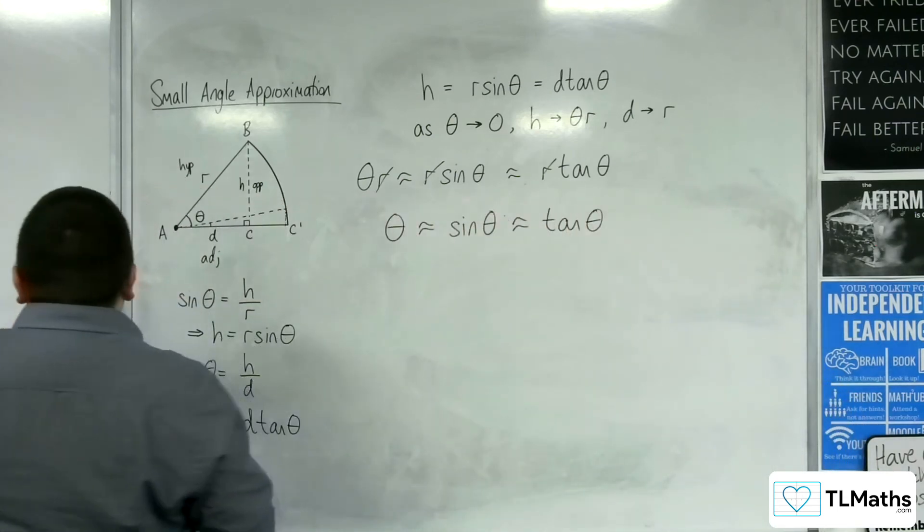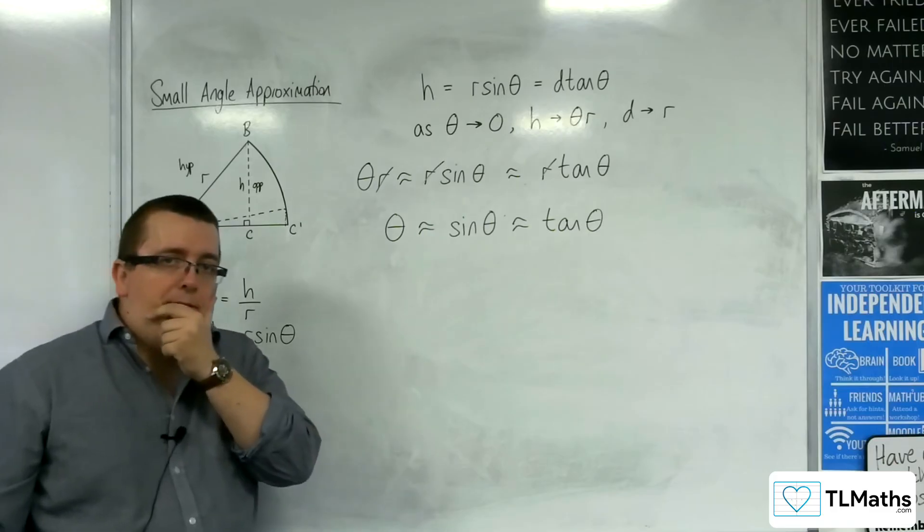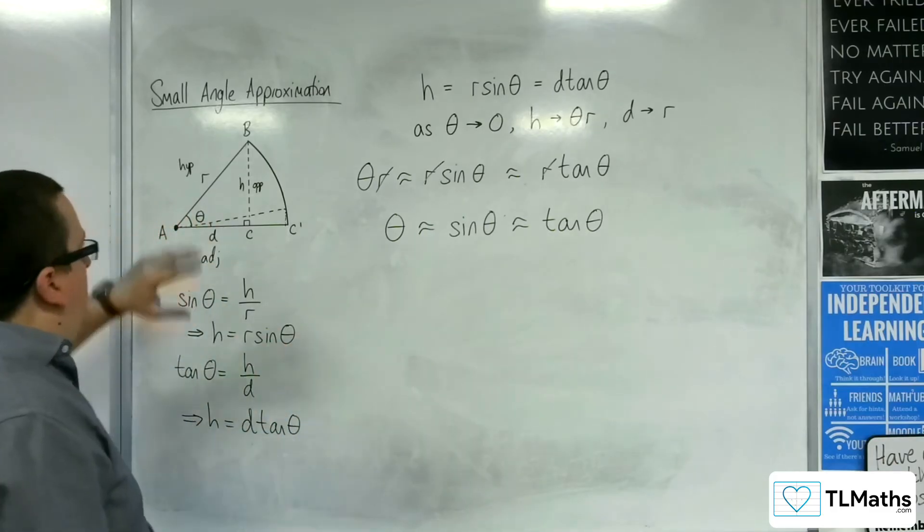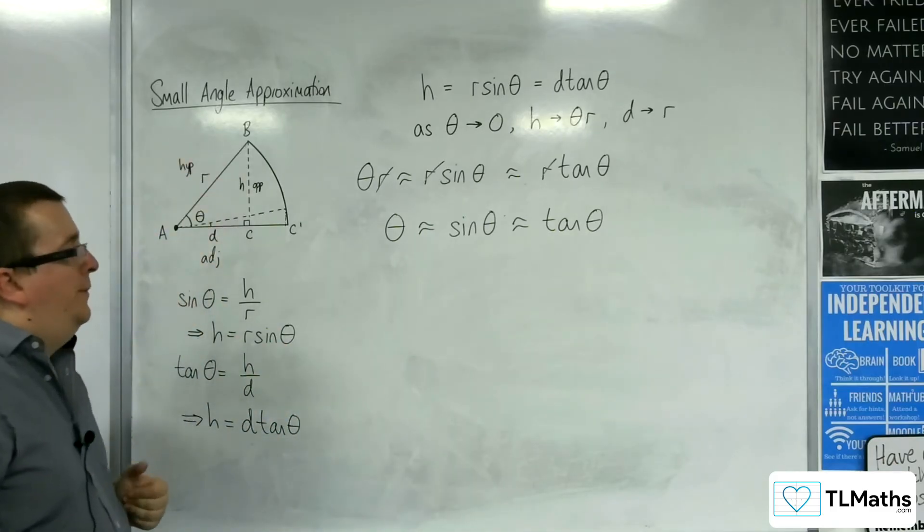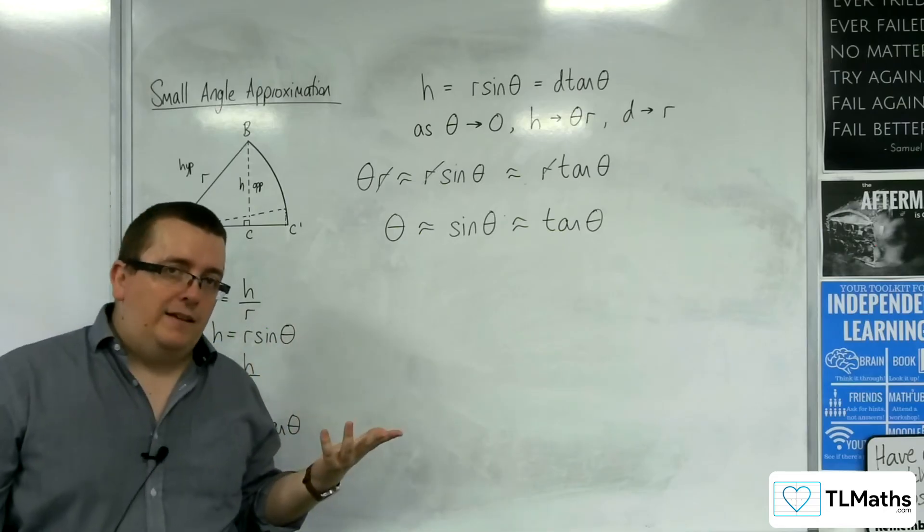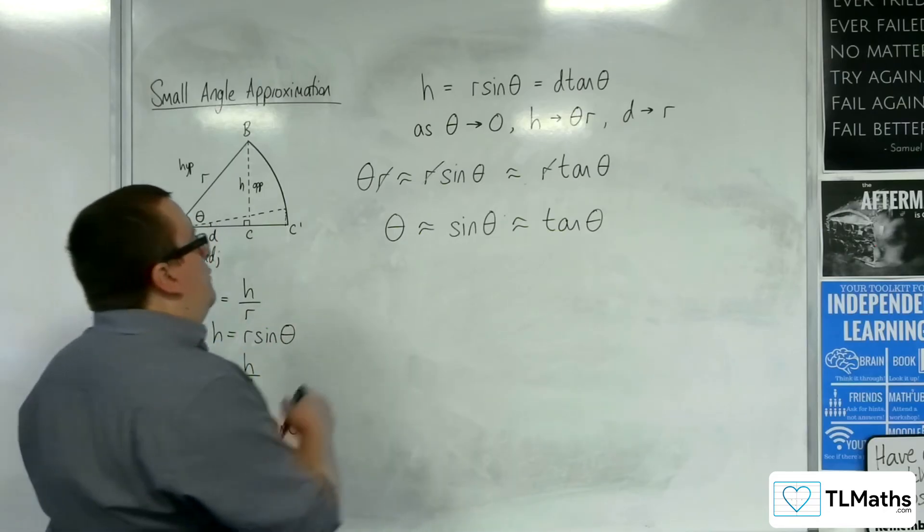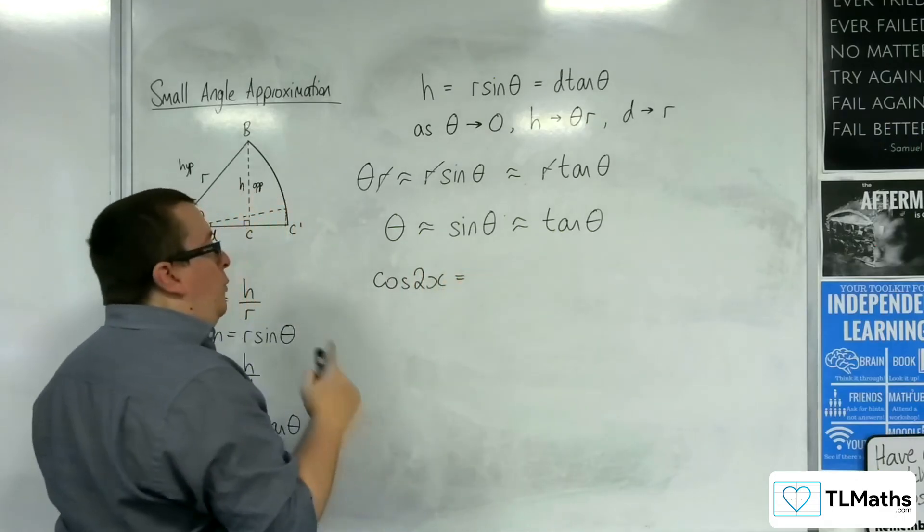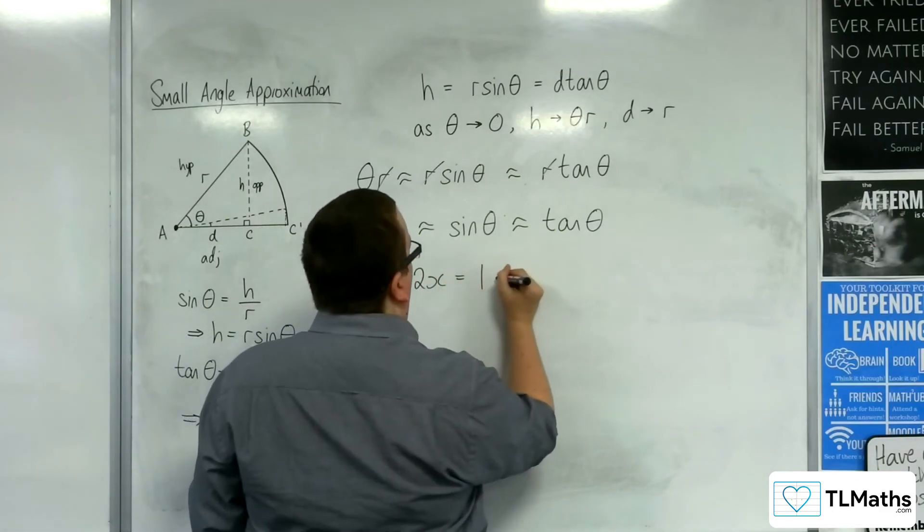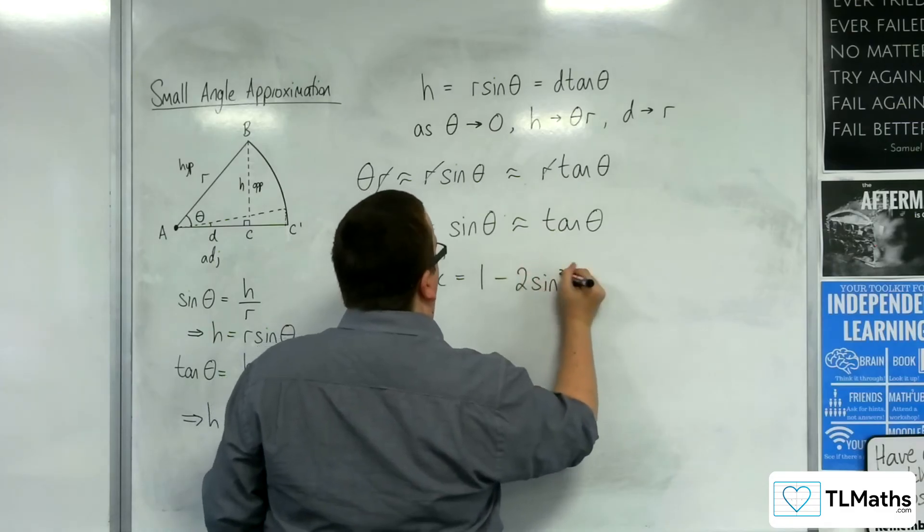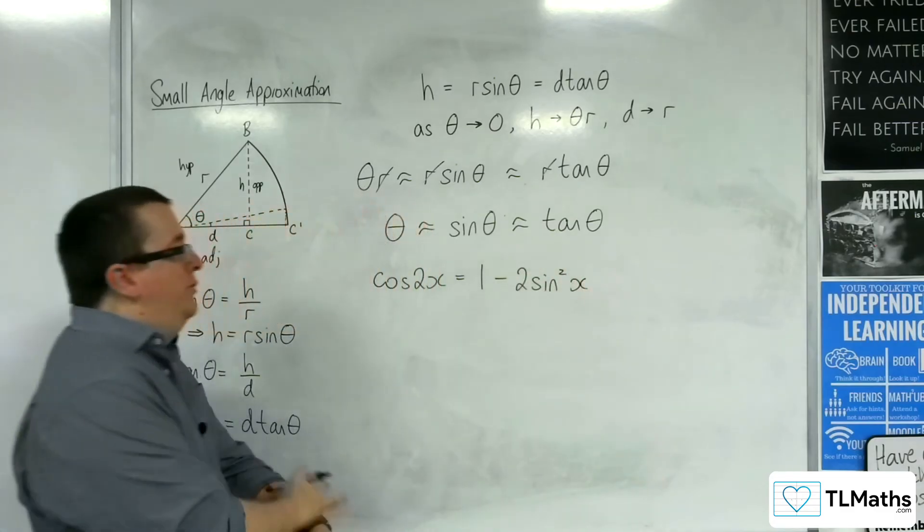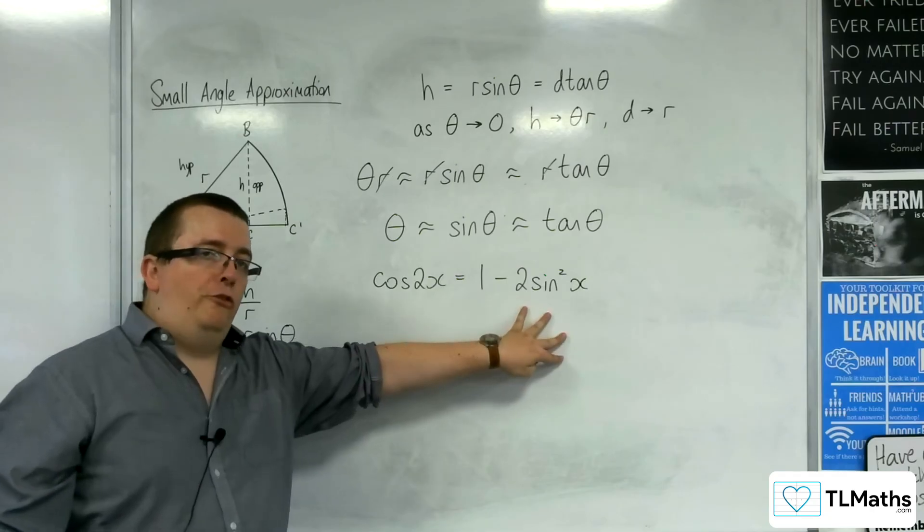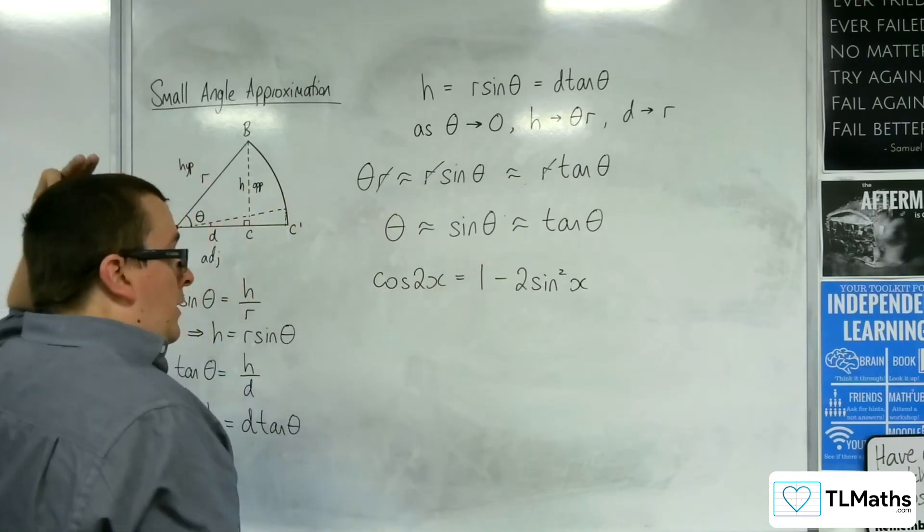Now how do we get cosine? Now I can't use this diagram for this, but I can use the double angle formula. So we've got the double angle formula that cosine of 2x is 1 minus 2 sine squared x. So we've got this double angle formula.